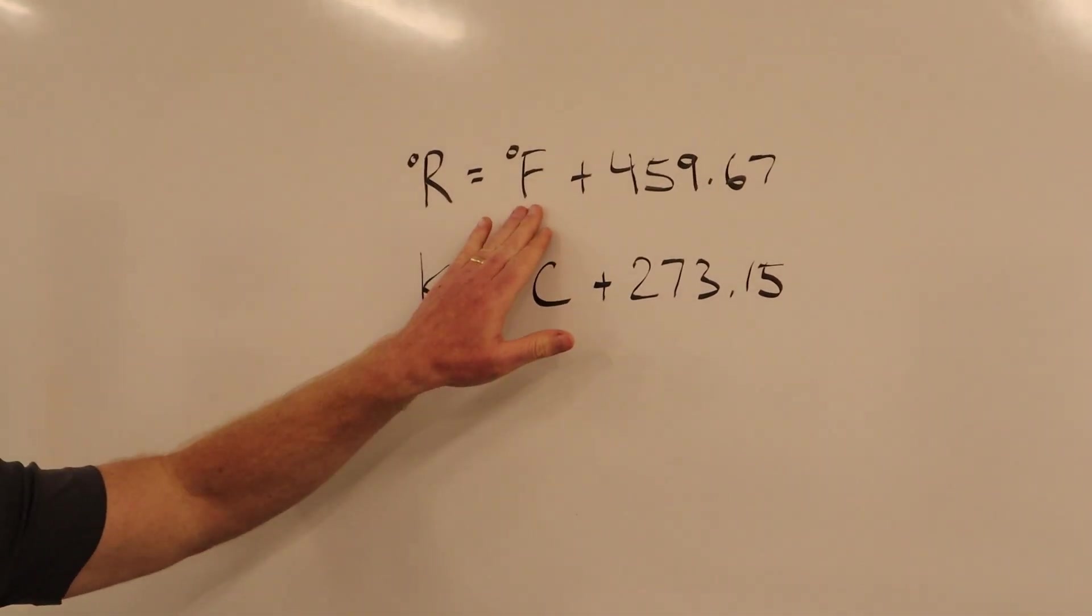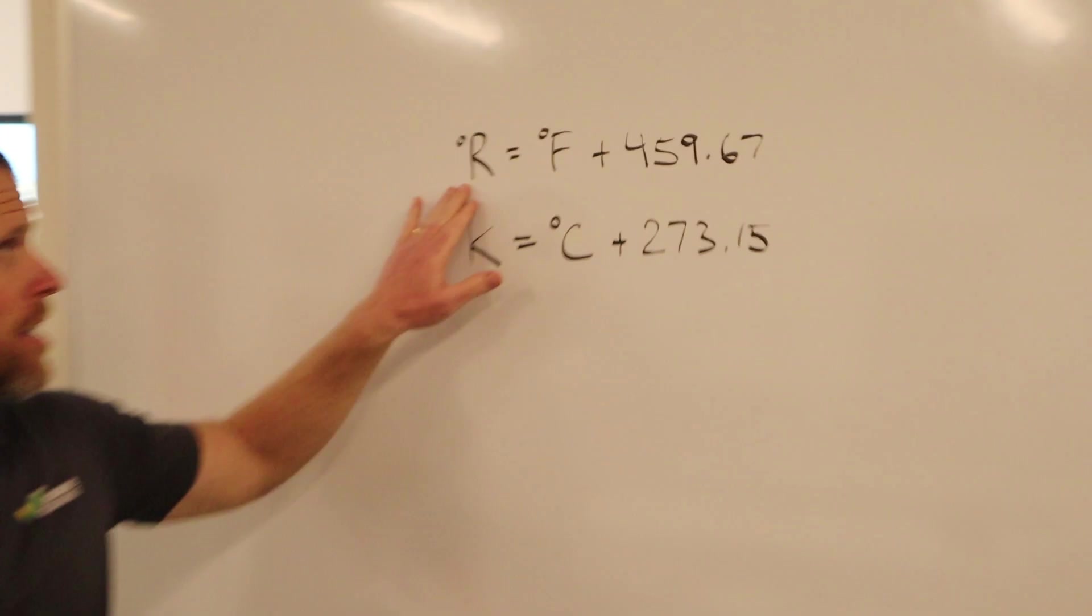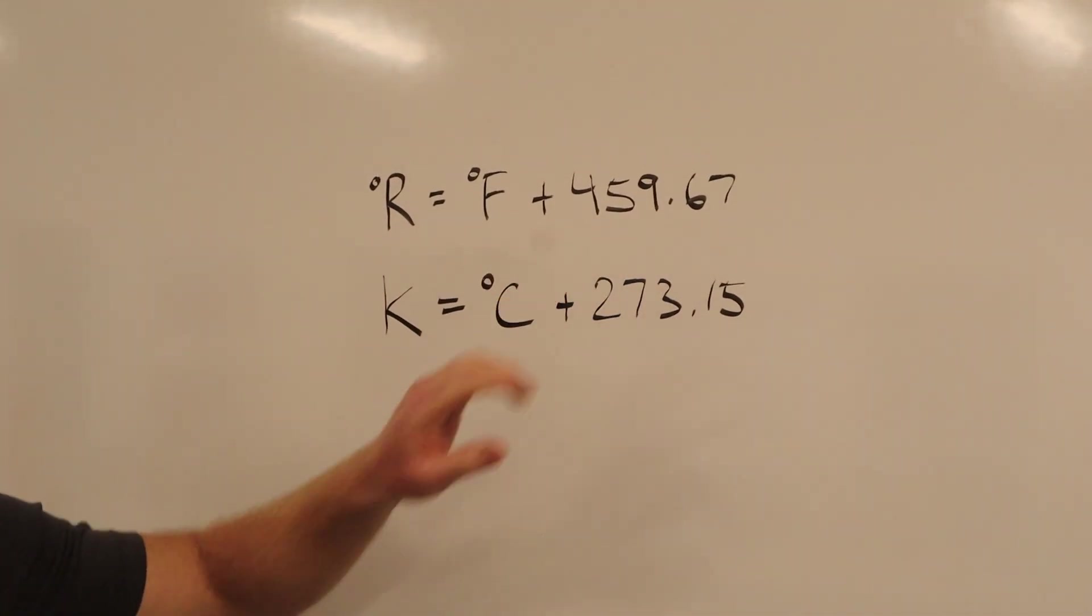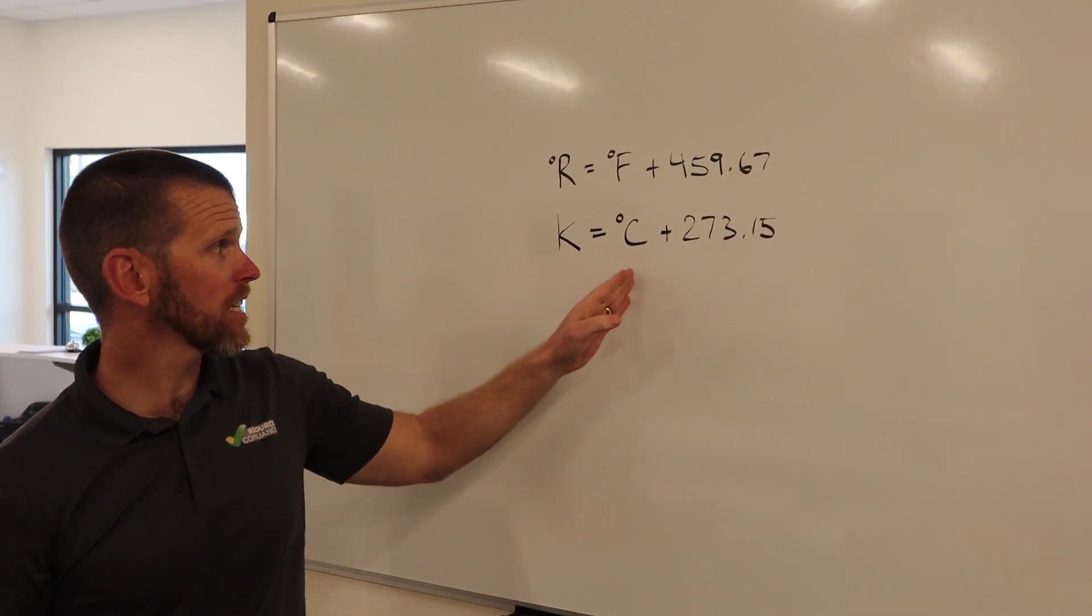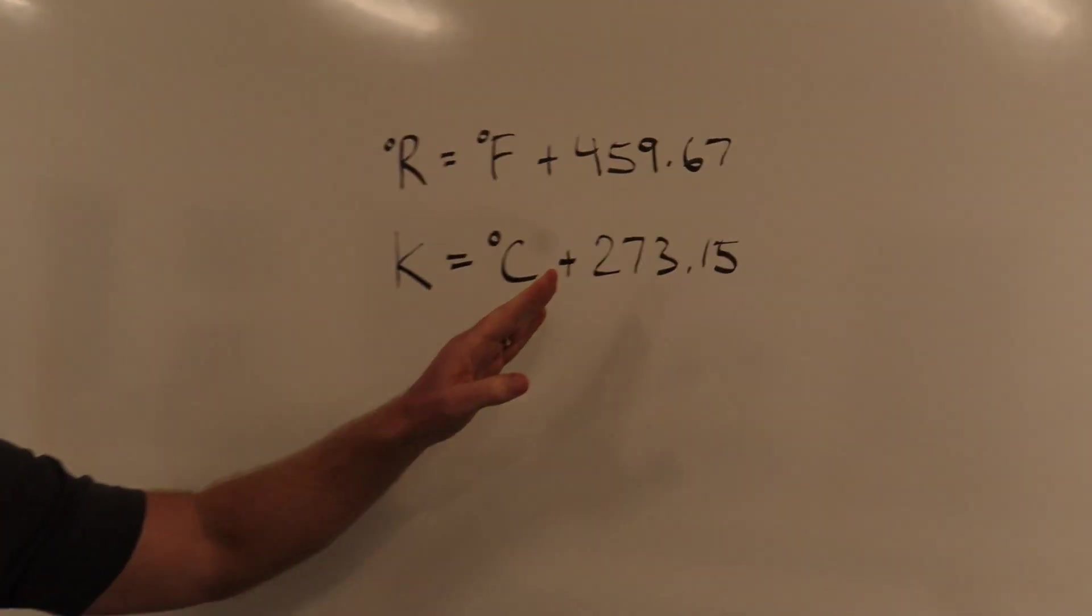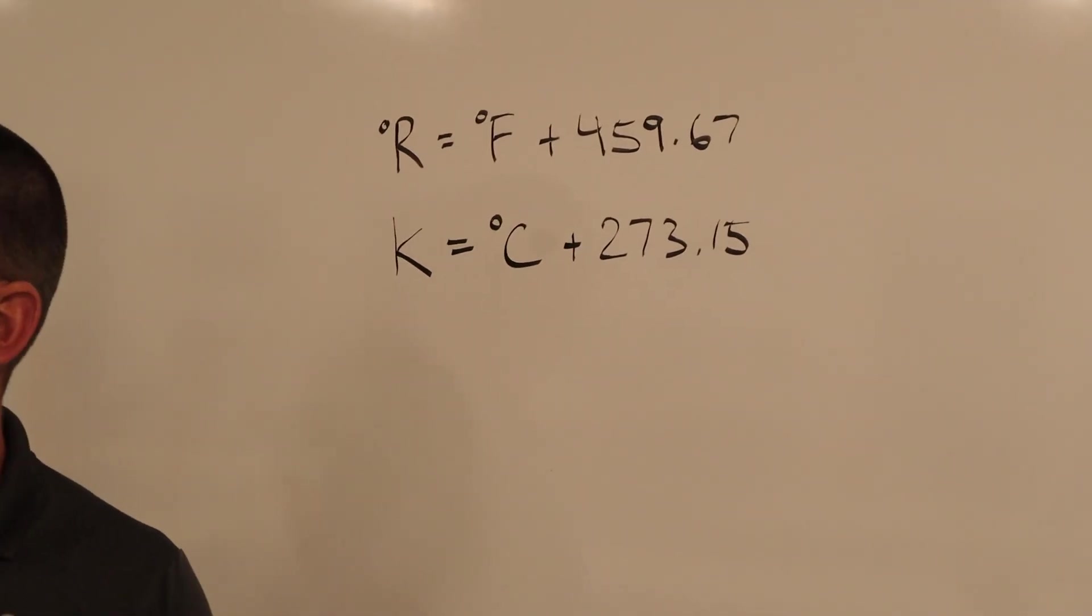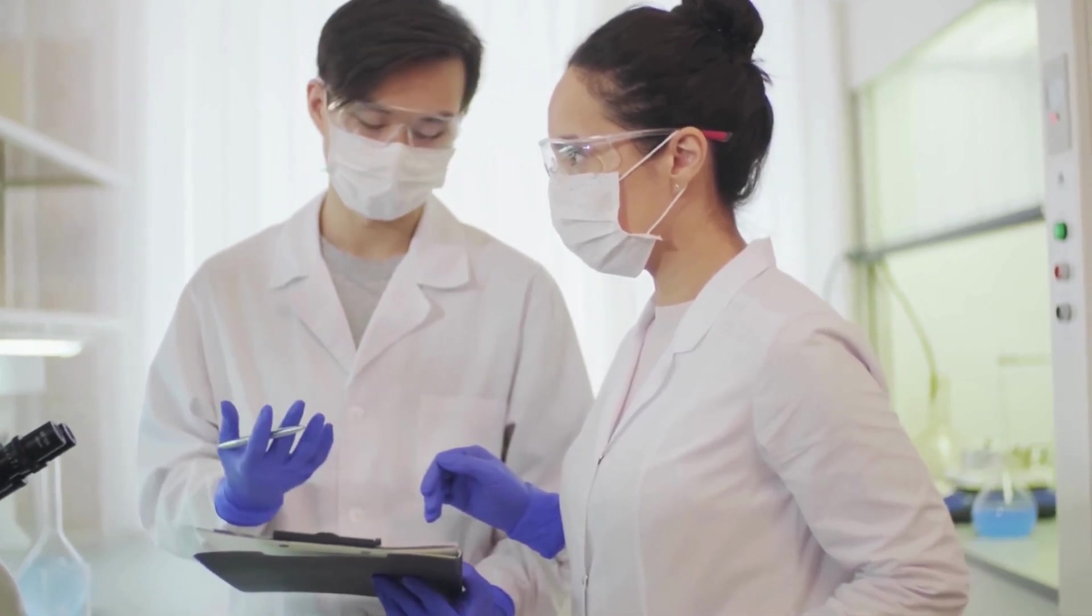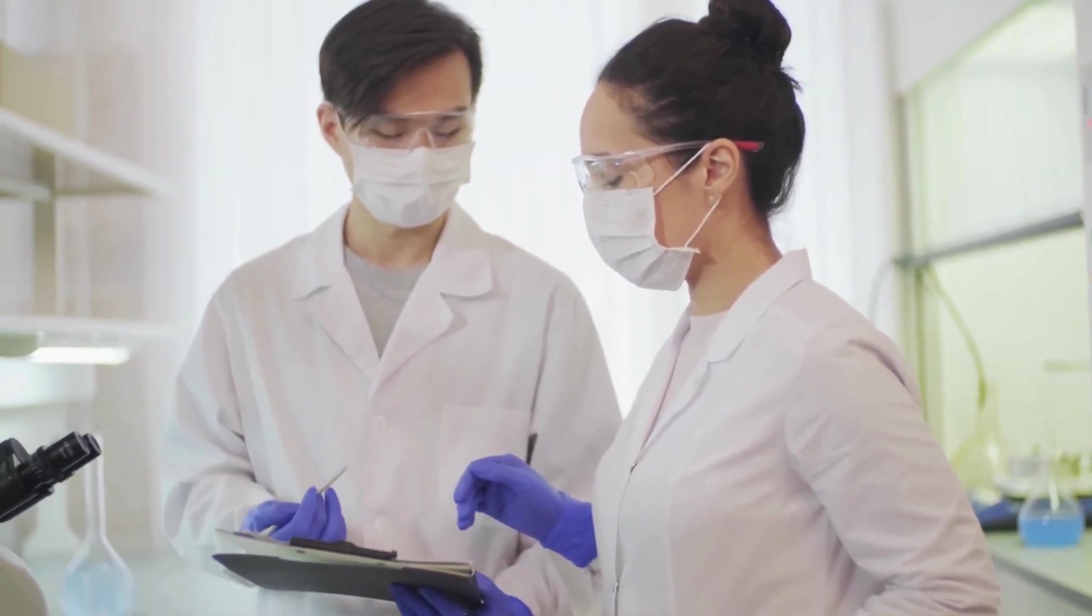To convert to absolute temperature scales is pretty straightforward. If you want to go from Fahrenheit to degrees Rankine, you simply add 459.67. Similarly, if you need to convert from degrees Celsius into Kelvin, the absolute scale in the metric system, you need to add 273.15. The Rankine and Kelvin scales are not commonly used in everyday life but are required for certain scientific calculations.